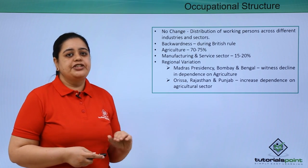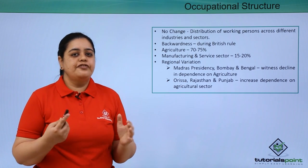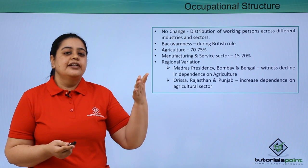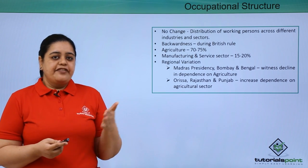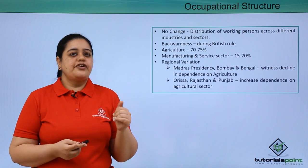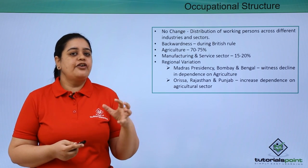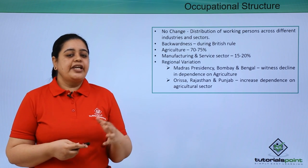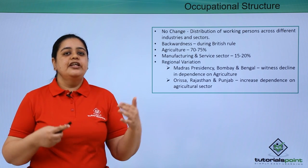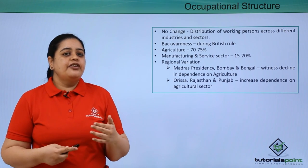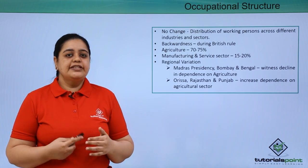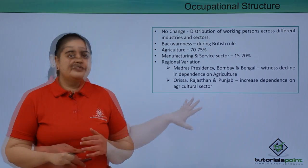Overall, the picture of the occupational structure was that 70 to 75% of the population was dependent on agriculture, and the rest were dependent on the manufacturing or service sector.